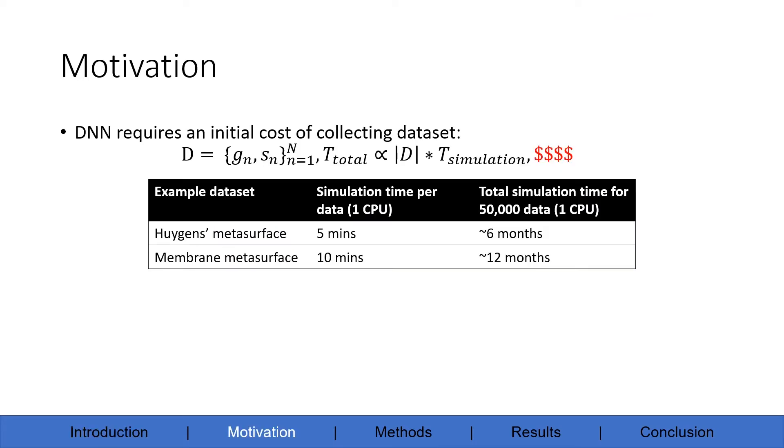For the current stage of the project, the major bottleneck we found is that training deep neural networks still needs an initial cost of collecting datasets. The typical simulation time for geometry on a single GPU is 5 minutes.